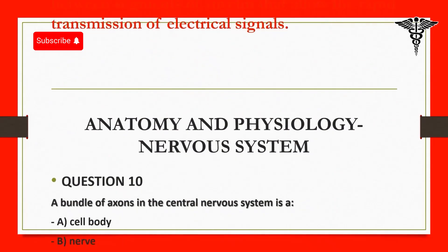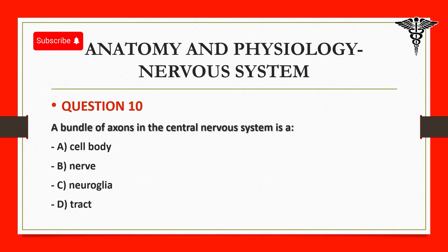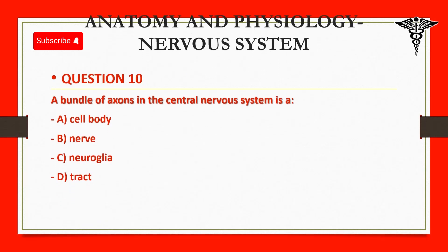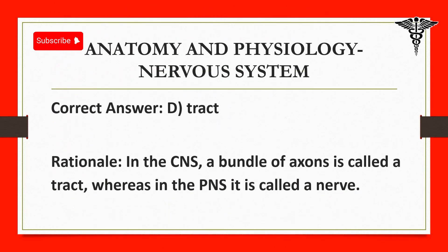Question 10: A bundle of axons in the central nervous system is: A. Cell body. B. Nerve. C. Neuroglia. D. Tract. Correct answer: D. Tract. Rationale: In the CNS, a bundle of axons is called a tract, whereas in the PNS it is called a nerve.